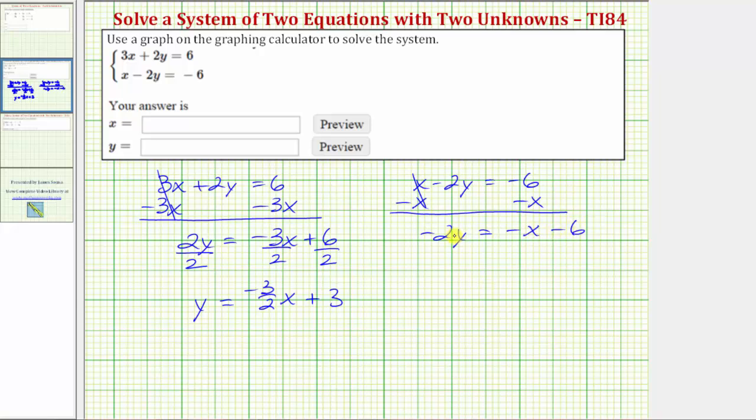To undo this multiplication, we'll divide both sides by -2. Dividing by -2 undoes multiplying by -2. Or -2 divided by -2 is 1, and 1 times y is y.